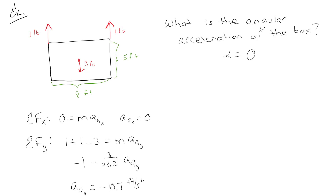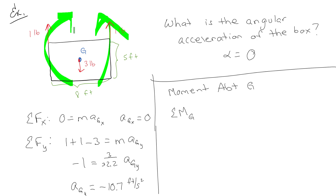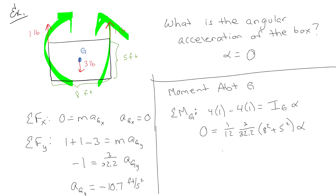There are two ways to handle the moment equation. First, let's take the moment about G. One cable is 4 feet away creating a positive moment, the other is 4 feet away creating a negative moment, so 4×1 minus 4×1 equals I_G·alpha. That's zero equals I_G·alpha, where I_G is (1/12)·(3/32.2)·(8² + 5²). Therefore alpha equals zero — not surprising, but now it's proven.